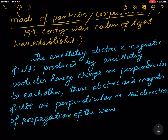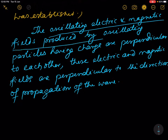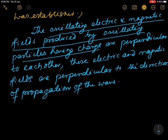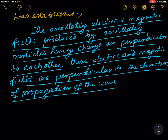The oscillating electric and magnetic fields are produced by oscillating charged particles. These fields are perpendicular to each other, and also perpendicular to the direction of propagation of the wave.